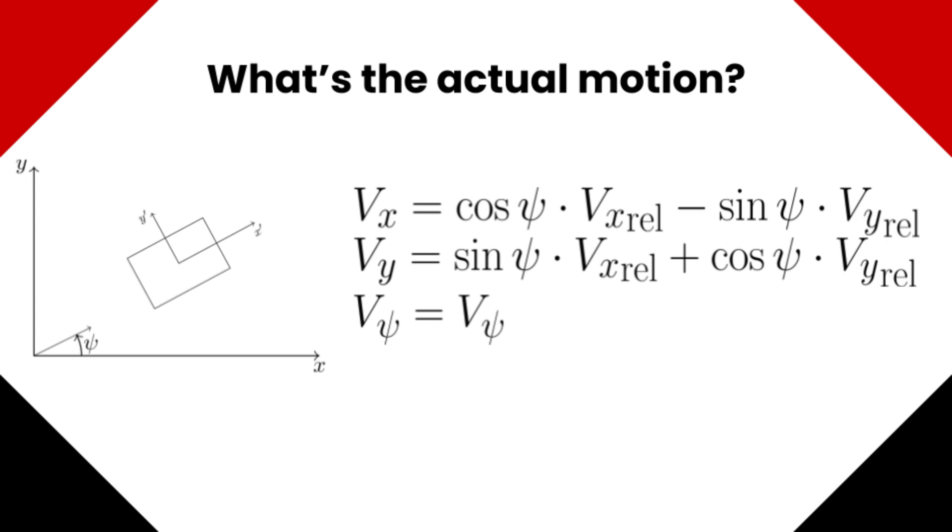Using trigonometry, we can rotate the frame of reference to find the true velocity of the robot on the field.